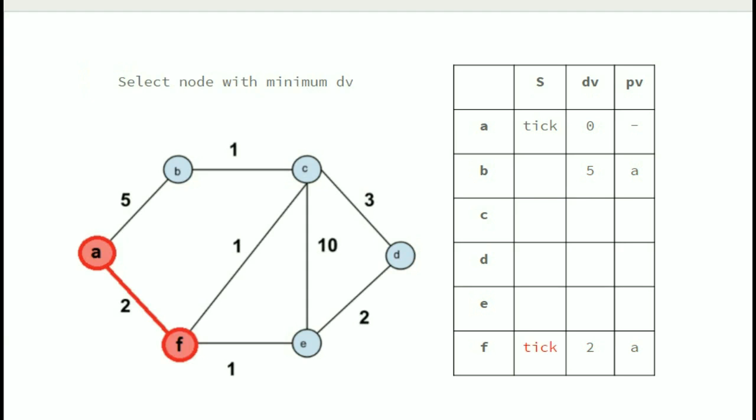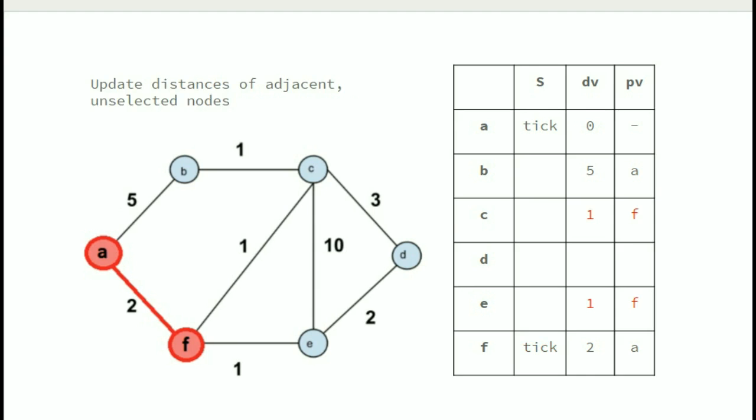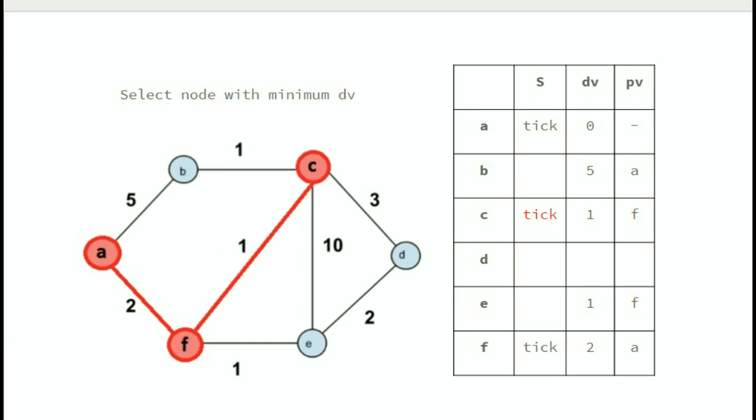Looking at the table, we know that F is at the least distance from A in the first iteration. So we add it to our MST and mark A and F as visited. Now we update the distances of adjacent nodes of F. The distance of both C and E from F is 1, so we update the table and choose edge FC as it has minimum distance from F. We could also choose edge FE, but since C is lexicographically smaller than E, we chose edge FC.